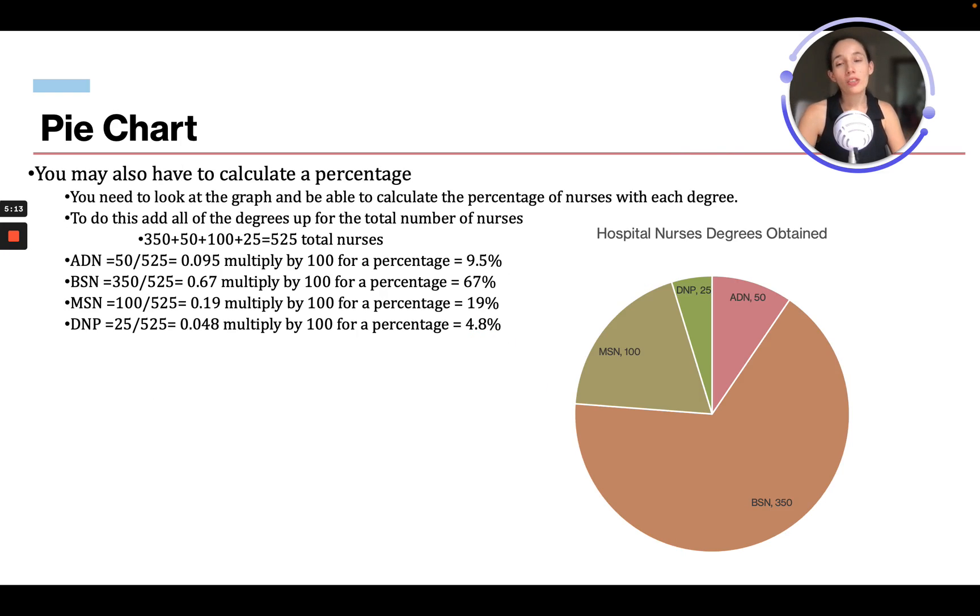You may also have to calculate a percentage on a pie chart. You have to look at the graph and calculate the percent of nurses with each degree. To do this, add up all the degrees for the total number of nurses. So we have BSN 350, ADN 50, DNP 25, and MSN 100. That gives us 525 total nurses. Our ADN nurses are 50 out of 525, which equals 0.095. Multiply this by 100 to get a percentage. So 9.5% of nurses have an ADN.